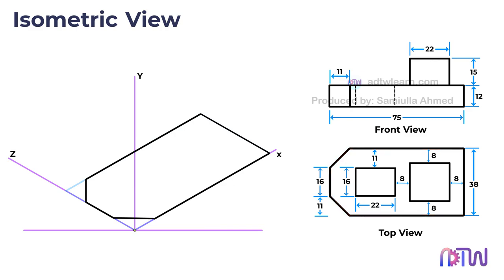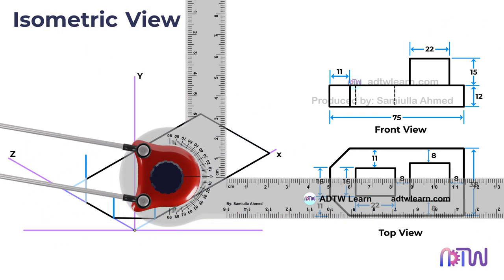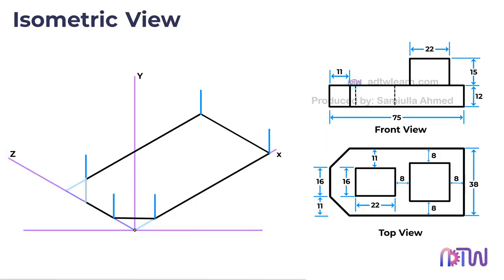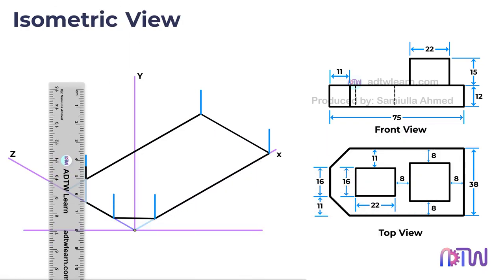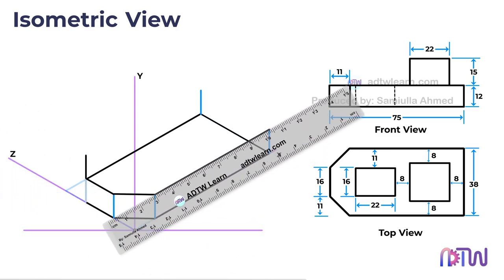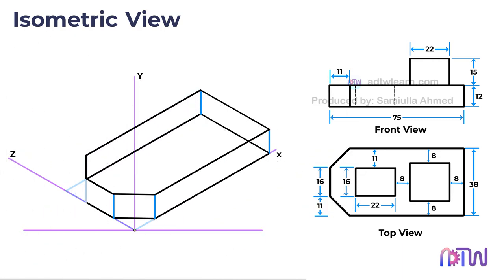In the front view, the thickness of the base is specified as 12 millimeters. To represent the thickness of the base, draw vertical lines measuring 12 millimeters from each corner point, then connect the endpoints of these lines to complete the base. Darken the visible portion of the base for clarity.